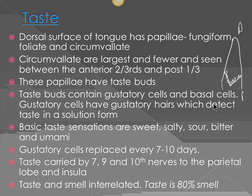In order to perceive taste, the substance must be in solution form — if you blot your tongue dry and put something on it, you cannot taste anything. The basic taste sensations are five: sweet, sour, bitter, salty, and umami. Umami is a special taste that helps you detect flavor, like a juicy steak, and helps you taste monosodium glutamate — MSG. It was discovered by the Japanese.